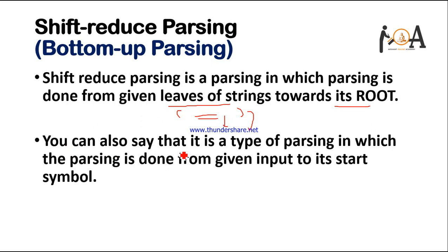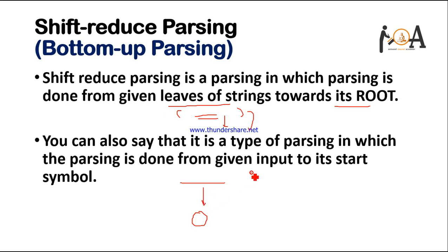You can also say that it is a type of parsing in which parsing is done from the given input to the start symbol. Our goal is, suppose we have a given input string and we have to find its start symbol. For that purpose we will use the production rule, and we will use the right-hand side of the production rule and convert it to the left-hand side.